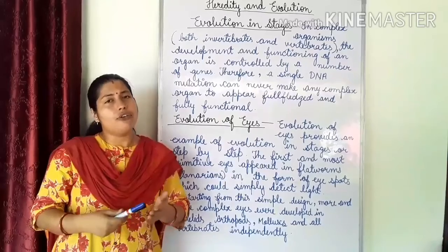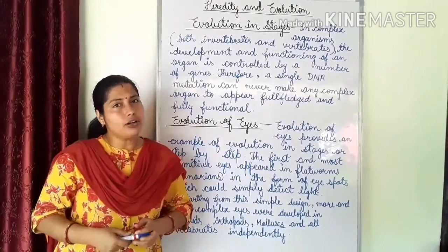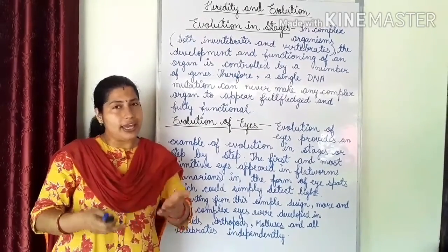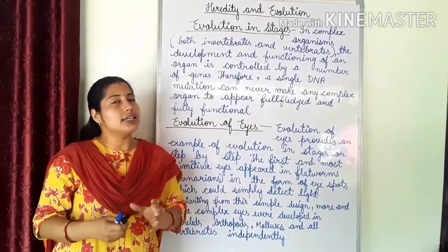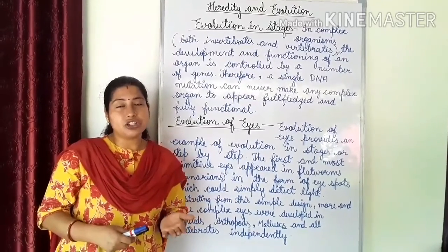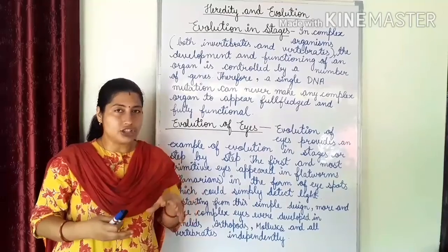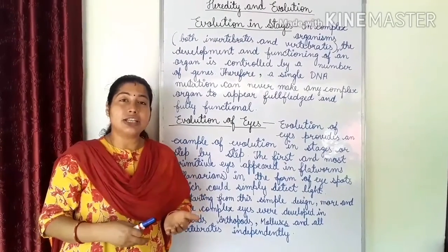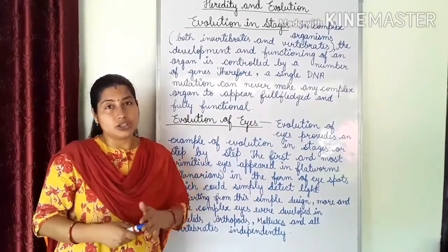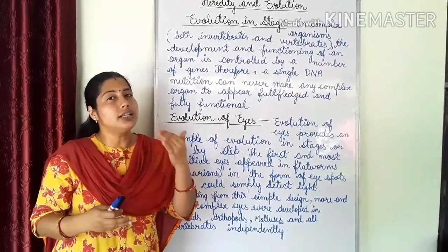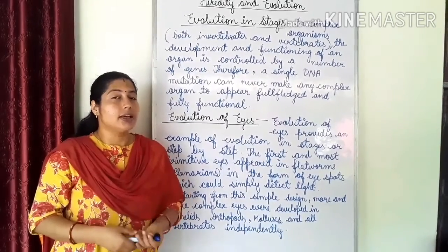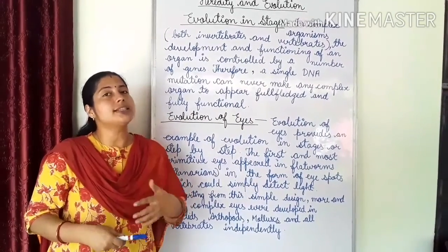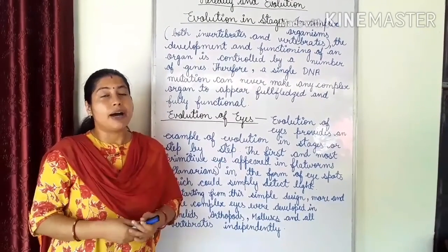Development and functioning of an organ is controlled by a number of genes. Therefore, a single DNA mutation can never make any organ appear full-fledged or fully functional. An organ's development and functioning are controlled by many genes. A single DNA mutation means DNA variations — changes in DNA sequencing during replication. Due to a single DNA mutation, no organ can become fully functional. Organ development happens in several stages over generations, step by step, by a number of mutations.